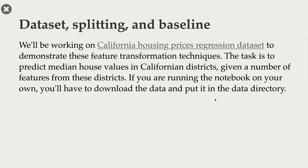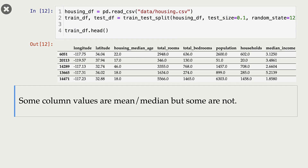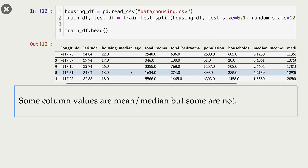In this video we will talk about imputation and scaling. For the rest of this lecture we are going to work with the California housing prices regression dataset. The prediction task is to predict median house values in California districts given a number of features from those districts. I'm not pushing the data into the course repository — if you want to run the notebook you will have to download the dataset yourself using the provided link and put it under the data folder. Now let me run this cell — I'm reading my CSV.